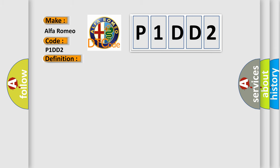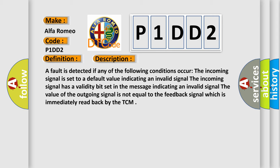And now this is a short description of this DTC code. A fault is detected if any of the following conditions occur: The incoming signal is set to a default value indicating an invalid signal. The incoming signal has a validity bit set in the message indicating an invalid signal. The value of the outgoing signal is not equal to the feedback signal which is immediately read back by the TCM.